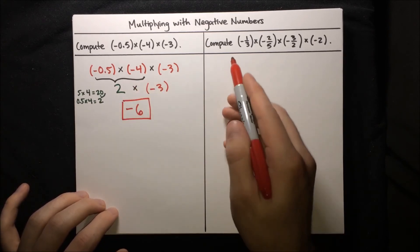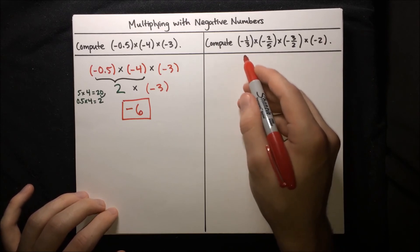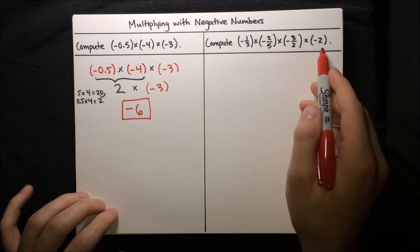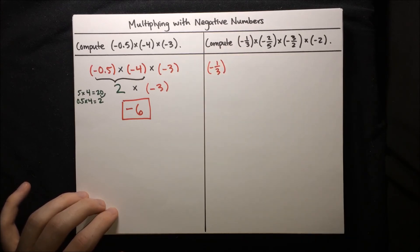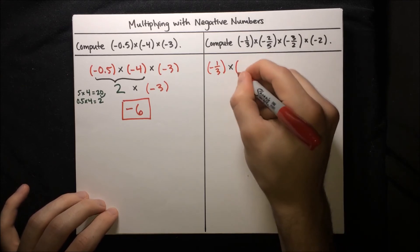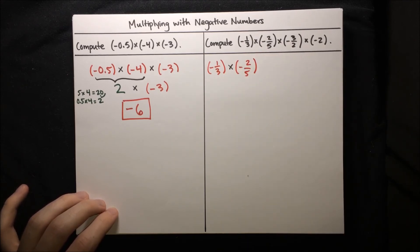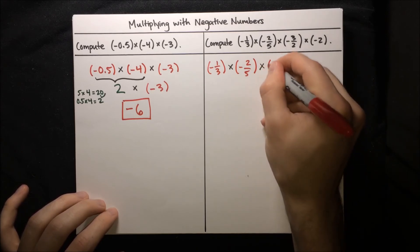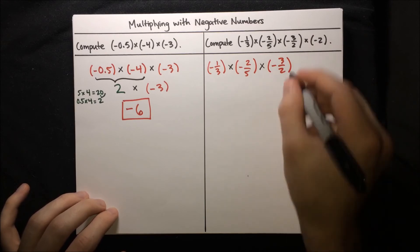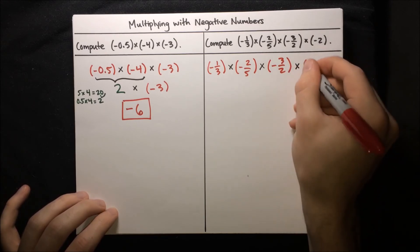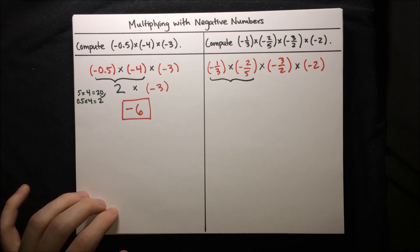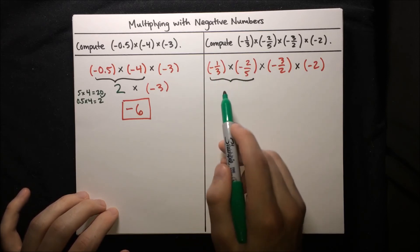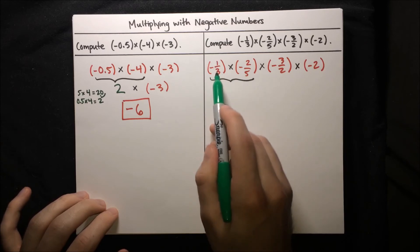Last problem: a big multiplication with fractions. Let's take it one pair at a time. We have negative 1/3 times negative 2/5 times negative 3/2 times negative 2. Starting with the leftmost pair: negative 1/3 times negative 2/5. This is negative times negative, so the two negatives cancel and we'll have a positive number. We just need to multiply 1/3 times 2/5.